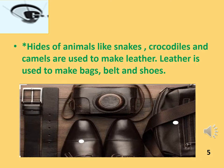Hides of animals like snakes, crocodiles and camels are used to make leather, and leather is used to make bags, purses, belts and shoes. 'Hides' means the skin of an animal. Under the Planet Protector Act, it is not right to kill animals for their skins — we should use the skin of only dead animals to make leather or other products.